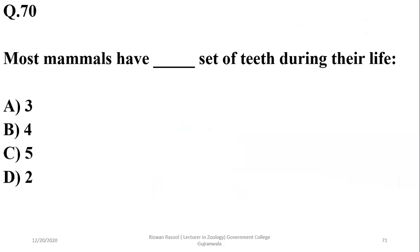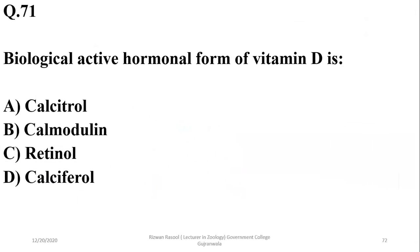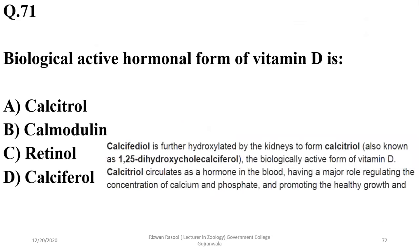Question 70: Most mammals have two sets of teeth during their lifetime — first deciduous and then permanent. Question 71: The biologically active form of vitamin D is calcitriol, so A is the right option.